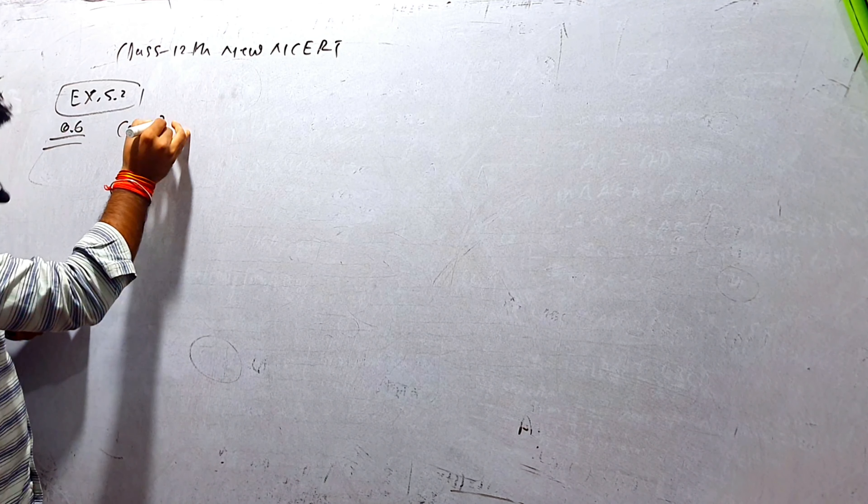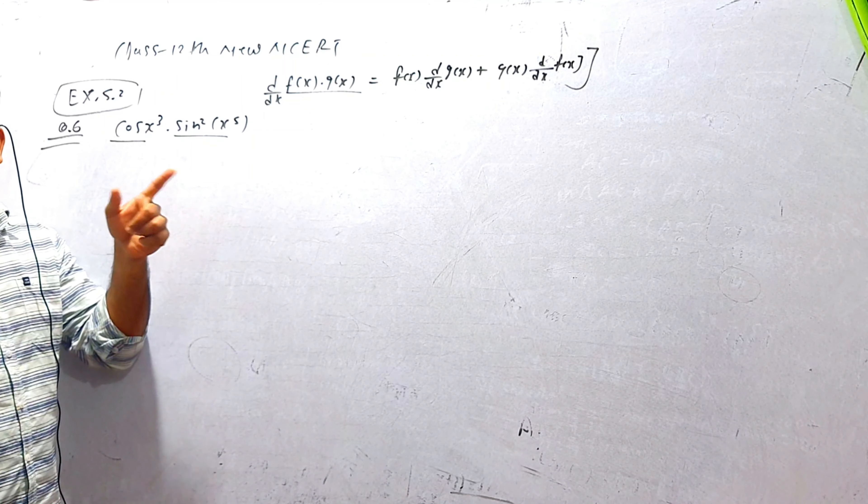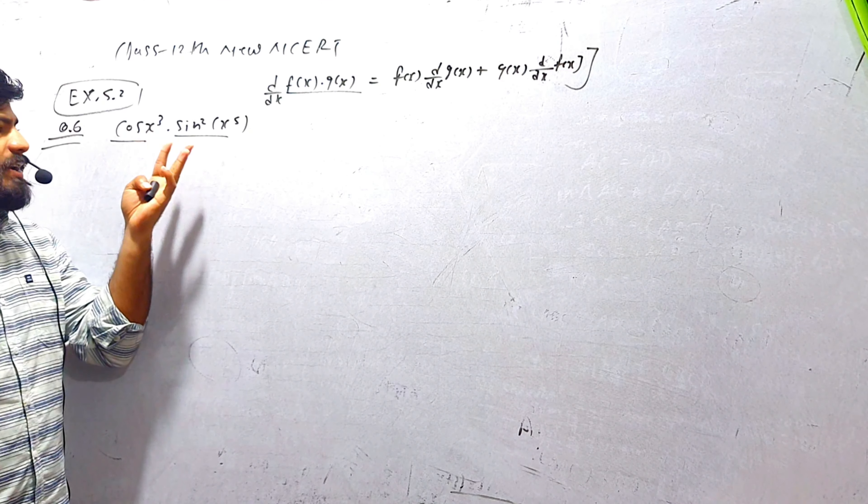d/dx of f(x)·g(x) के लिए multiply वाला formula: first function को as-is रखो, second function का d/dx करो, plus second function को as-is रखो और first function का d/dx करो। यह formula है — जब भी दो functions का multiply होगा और differentiation करना है तो यही formula लगाना है। Chain rule से direct solve करना ठीक है।